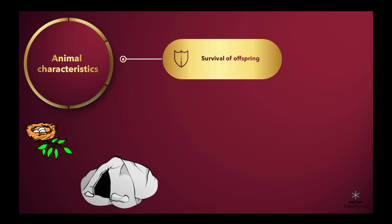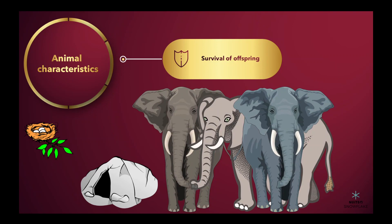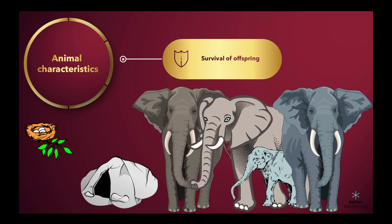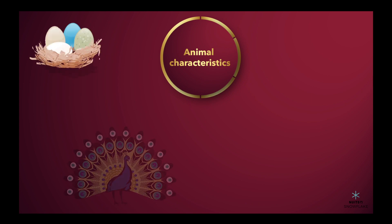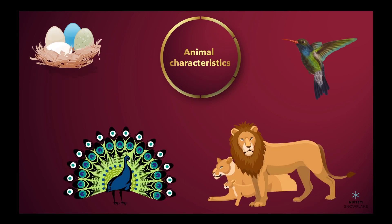To protect offspring, animals might engage in behaviors like building nests or dens to protect from the cold. Living in groups is another behavior common for protection. For example, elephants when traveling keep their offspring in the center or middle part of the herd. Animals go to great lengths for successful reproduction, from building nests and creating mating dances to forming intricate social bonds.